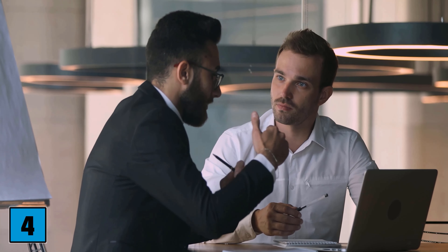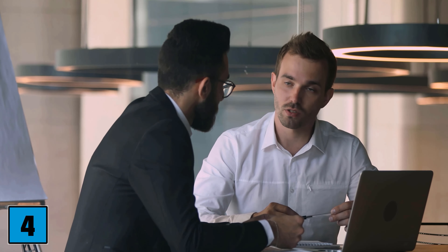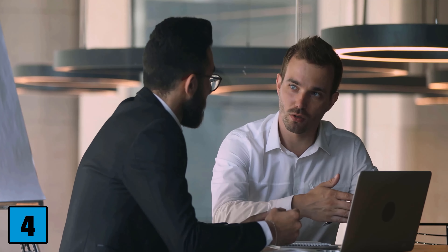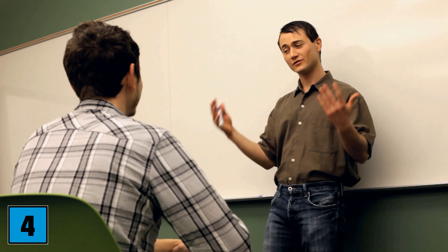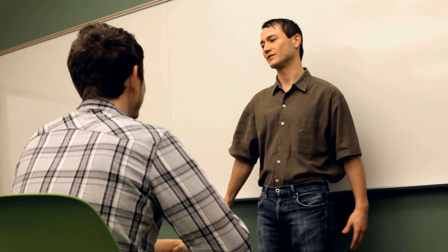Number 4: Explain the topic completely again. At this point you are back at step 1, since the Feynman method, as already mentioned, forms a circle. You now check if your research was successful and if you understood the topic. Repeat this circle until you can explain the topic without any problems. The Feynman method helps not only in relation to current topics, but also to deepen existing knowledge.